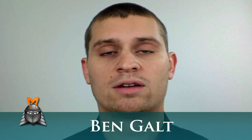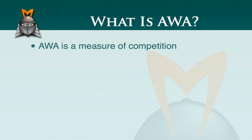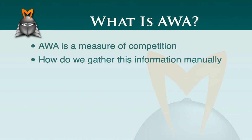In the keyword research module, there's a feature called AWA, which stands for AdWords Advertisers. Basically, it's a measure of competition — a measure of how many people are competing for any given keyword using Google AdWords. Before I show you how to use this in Market Samurai, I'd like to show you how we gather this information first, so you'll understand its significance and how useful it can be at the click of a button.